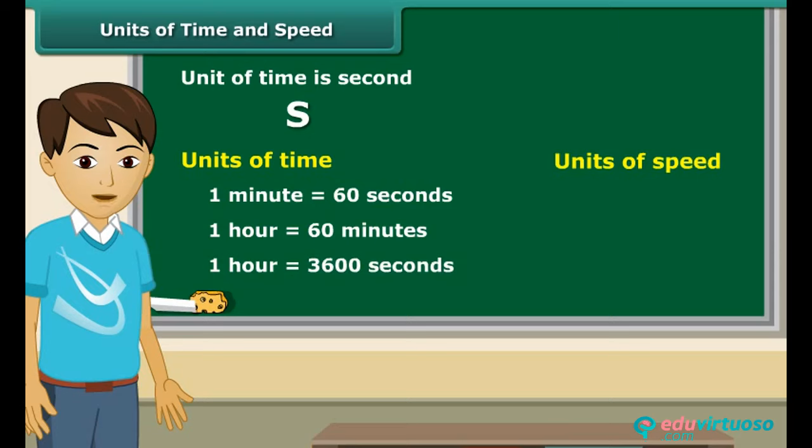The basic unit of speed is meter per second. We can also express it in other units such as meter per minute and kilometer per hour. We write the symbols of all units in singular.